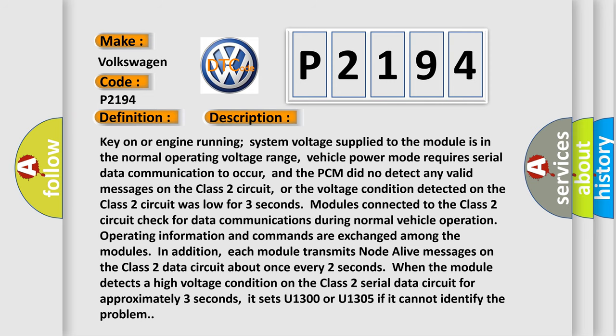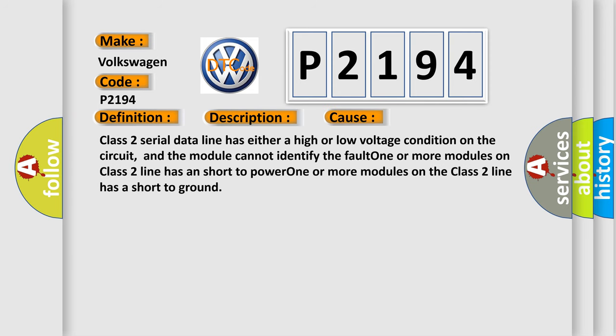This diagnostic error occurs most often in these cases: Class 2 serial data line has either a high or low voltage condition on the circuit, and the module cannot identify the fault. One or more modules on class 2 line has a short to power. One or more modules on the class 2 line has a short to ground.